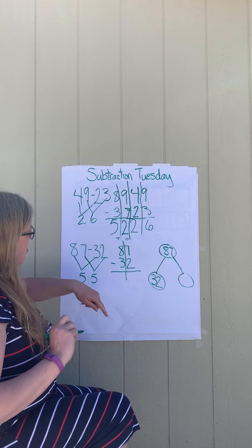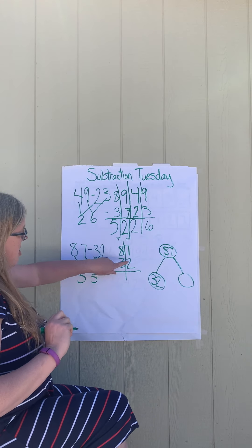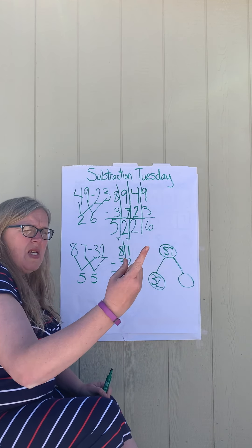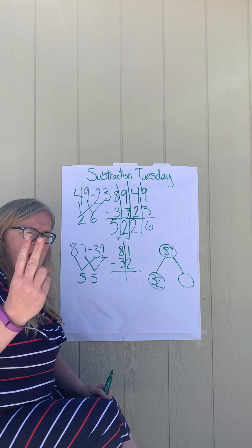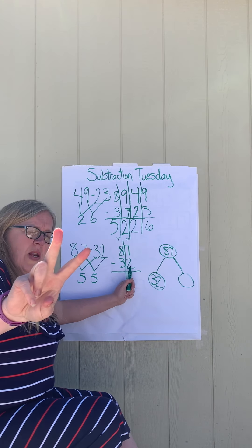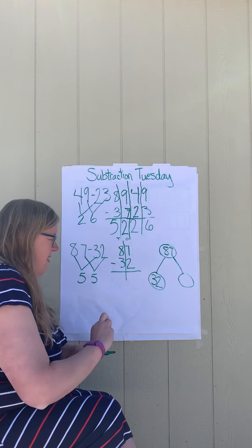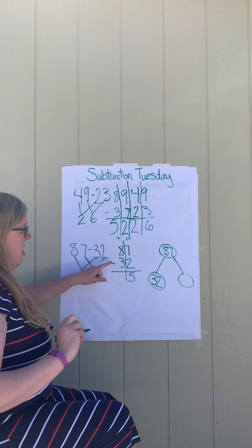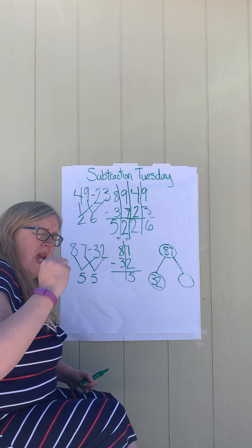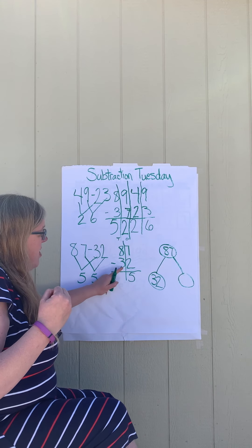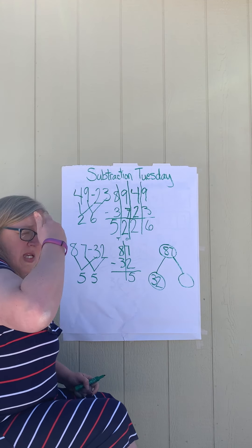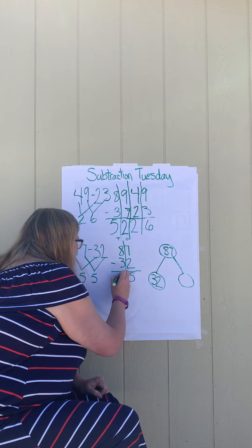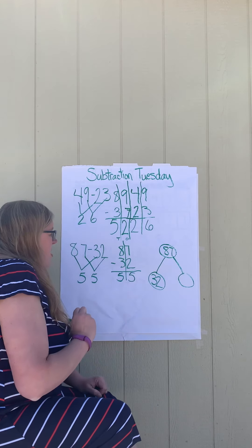We have 55 from this one. Let's see if the vertical gives us the same. Seven minus two — I'm going to use a strategy called counting backwards. Seven, six, five. When I put up two fingers, I know I'm done, and I said the number five. Now eight take away three — I'm going to count backwards again. Eight is in my brain, and I put up three fingers: seven, six, five. The answer is 55.